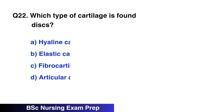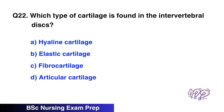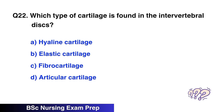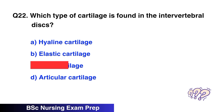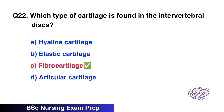Question 22. Which type of cartilage is found in the intervertebral disc? The correct option is C, fibrocartilage.